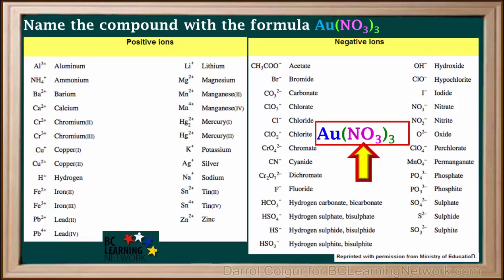So we look for polyatomic ions in the formula Au(NO₃)₃. NO₃ comes from the nitrate ion, NO₃⁻.